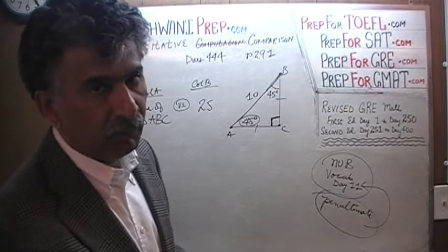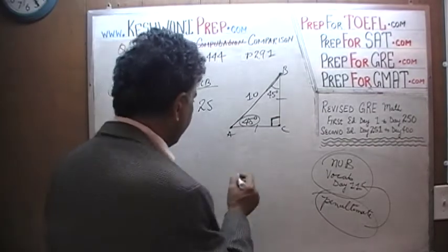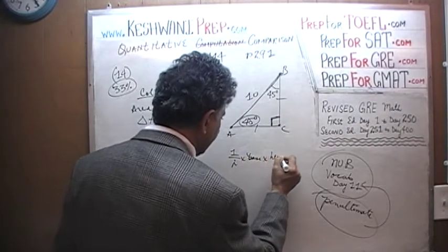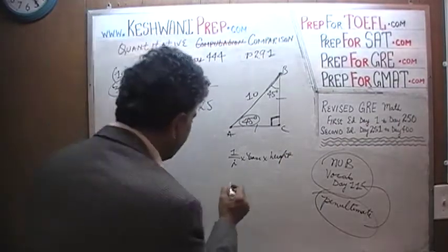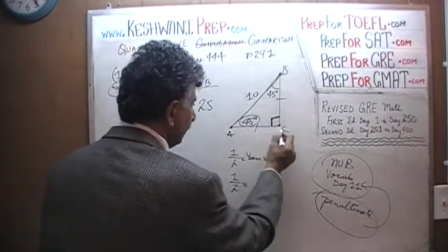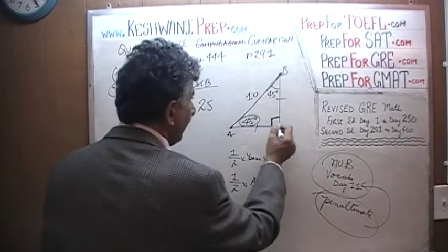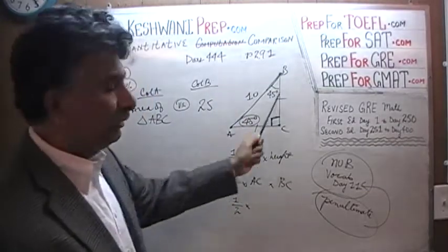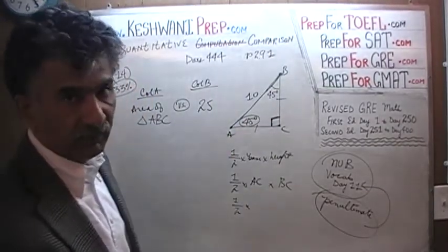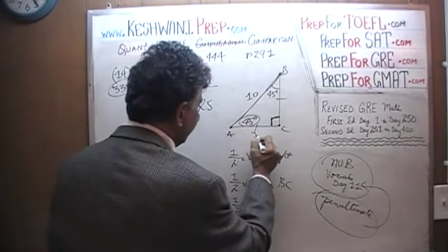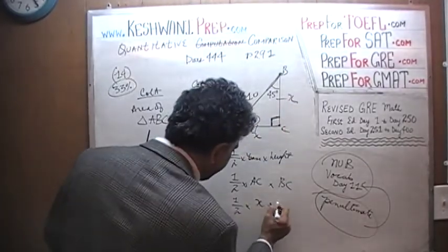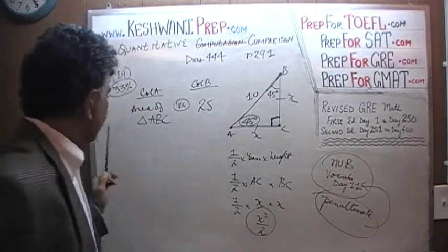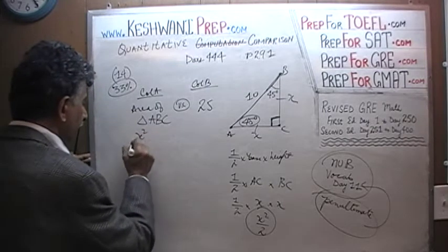The next question is how do we find the area of the triangle? Area of a triangle is one-half base times height — one-half times AC times BC. But AC equals BC because both angles are 45 degrees, so let's call each of them X. The area therefore becomes one-half times X times X, which is X squared over 2. That's what it boils down to: X squared over 2.